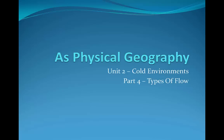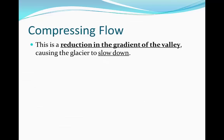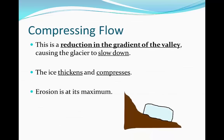Welcome to the next lesson in our AS Physical Geography course. Today we're going to look at the different types of flow. The first type of flow is called compressing flow and this happens when there's a reduction in the gradient of the valley. This causes the glacier to slow down. The ice thickens and compresses and as a result erosion is at its maximum.